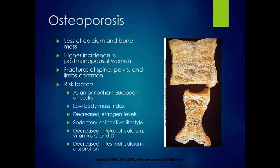With aging, there is loss of calcium and bone mass. There's a higher incidence in postmenopausal women, but there is also a high incidence of osteoporosis in men. According to the American Bone Health organization, 75% of women and 25% of men will have an osteoporotic fracture in their lifetime — that's a large number. Fractures of the spine, pelvis, and limbs are common. Men are more likely to have hip fractures, while women are more likely to have spine and pelvic fractures.